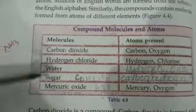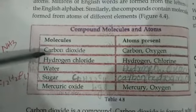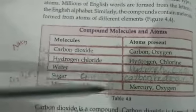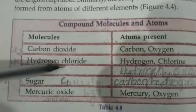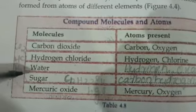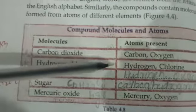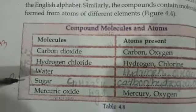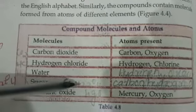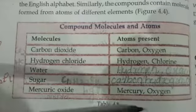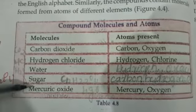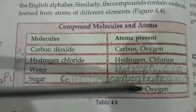Compound molecules and atoms. Carbon dioxide is a compound which contains carbon and oxygen. Then hydrogen chloride — hydrogen and chlorine are the component elements. Then water contains hydrogen and oxygen. Then sugar — the formula is C₁₂H₂₂O₁₁ — so carbon, hydrogen and oxygen are present in sugar.